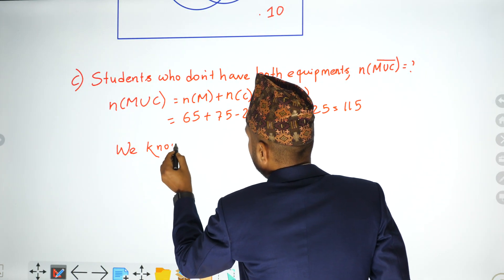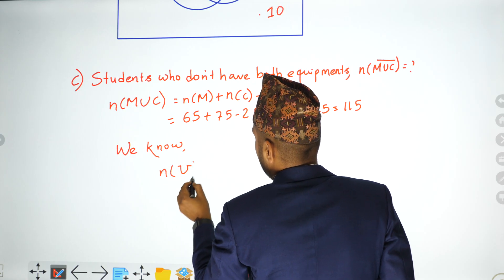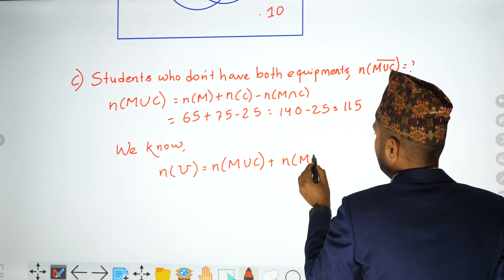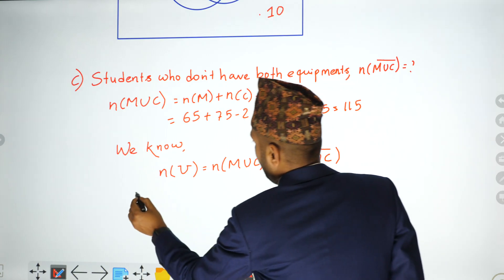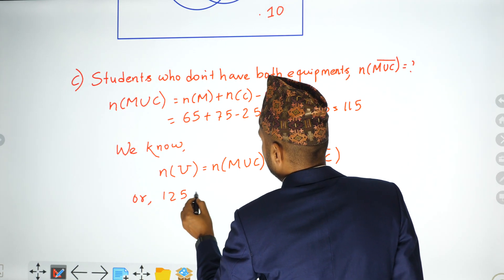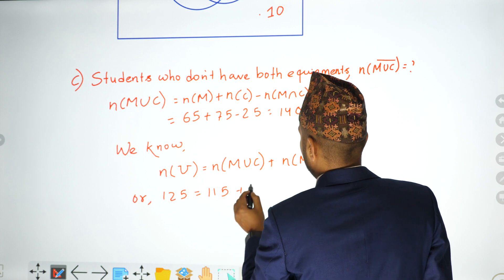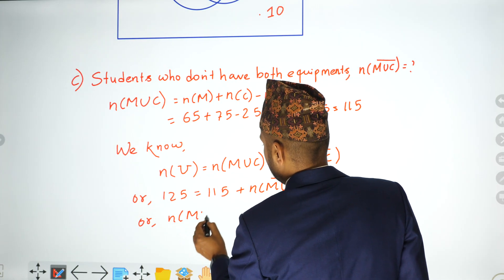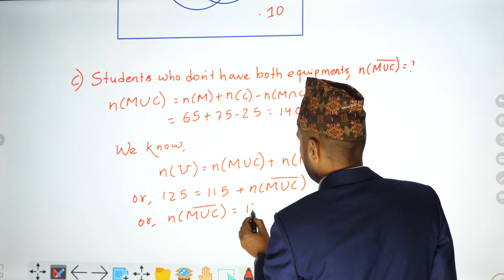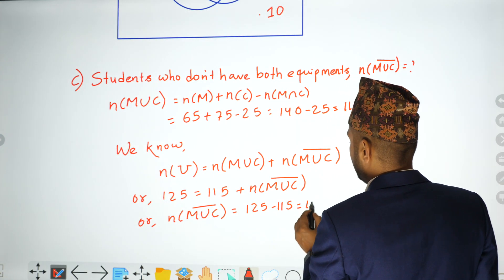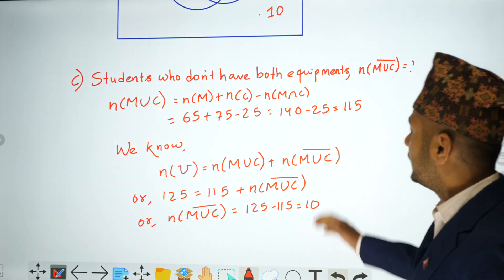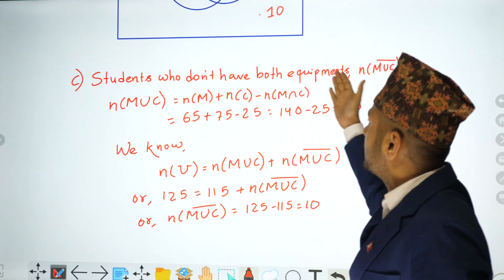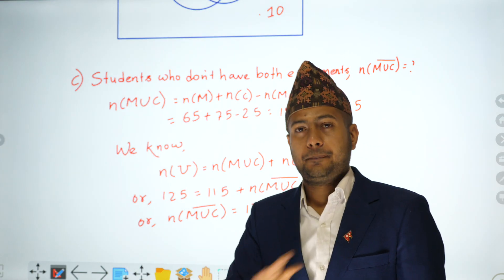We know the universal set cardinality n(U) = 125. The cardinality n(M union C) = 115, so n(M union C) plus n(M union C) complement equals 125. Therefore n(M union C) complement = 125 minus 115 = 10. Therefore, the total number of students who do not have both equipment is 10.